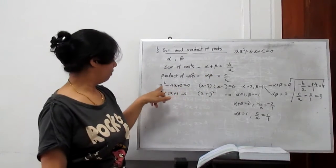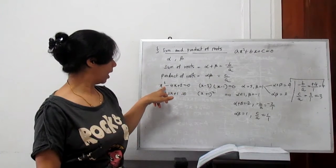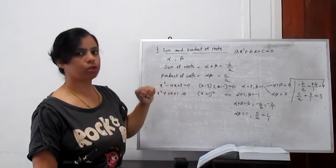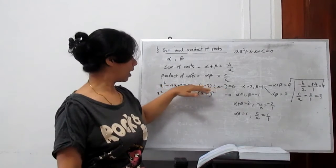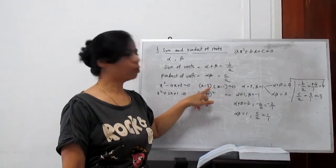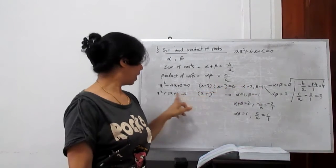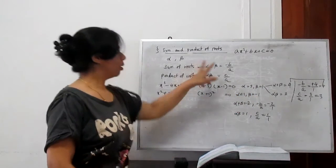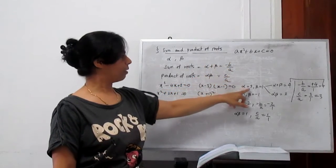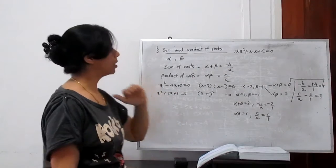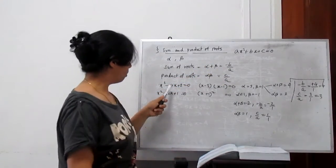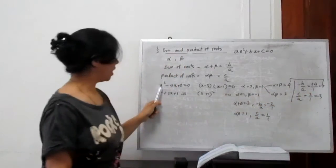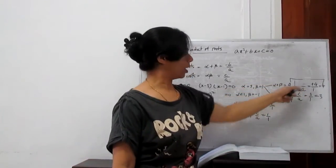Let's see if this is true or not. If I have the quadratic equation x² - 4x + 3 = 0, when we factorize, the factors are (x-3)(x-1), meaning alpha is 3 and beta is 1. Now alpha plus beta is 3 + 1 = 4. Using our formula, -b/a: b is -4, so -(-4)/1 = 4. Yes, it's true.